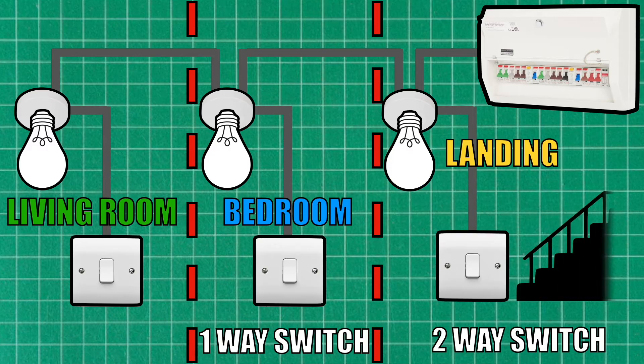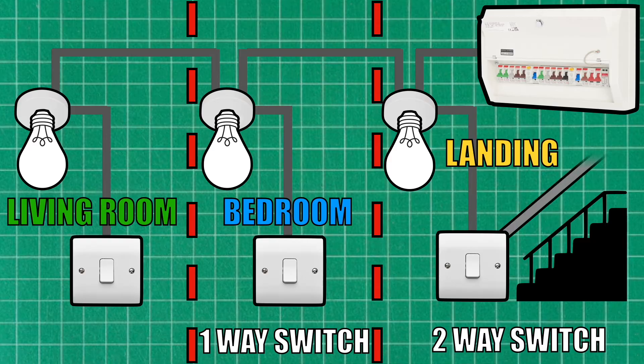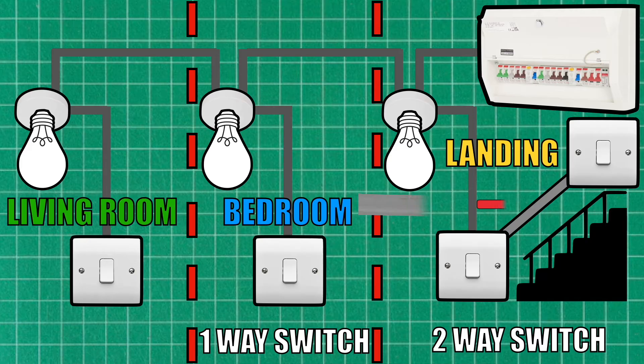So all we do is place one two-way switch at the bottom of the landing and then another two-way switch at the top of the landing. And we link the two switches together using something called three core and earth, and this just has an additional conductor compared to the normal twin and earth cable. So now we're able to operate our landing light from the top of the landing as well as the bottom.